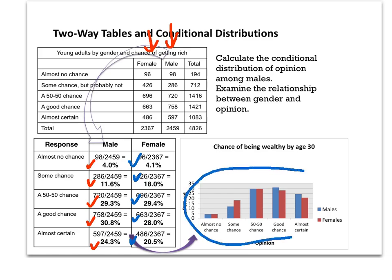Using the side-by-side bar graph, I can start to see patterns — there are some differences between males and females in the 'some chance' category, while in categories like '50-50 chance' and 'almost no chance' there's no difference at all. Marginal distributions look at the total survey; conditional distributions look at particular categories within that survey, and are usually more useful because they allow us to compare groups — in this case, males versus females and their answers about their chances of being rich.